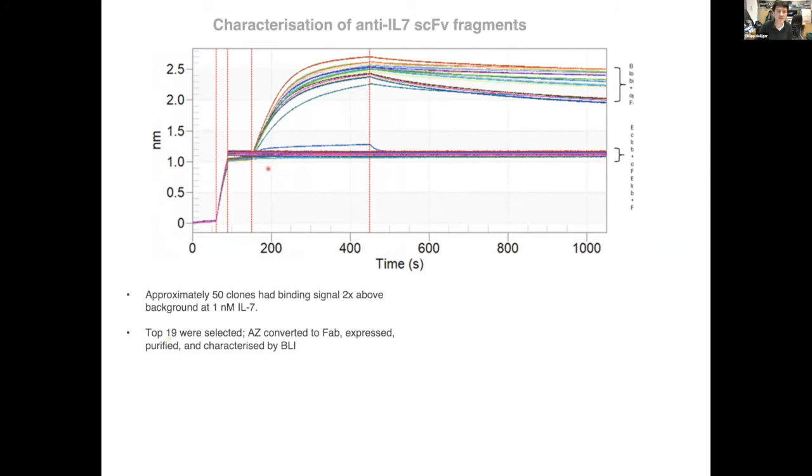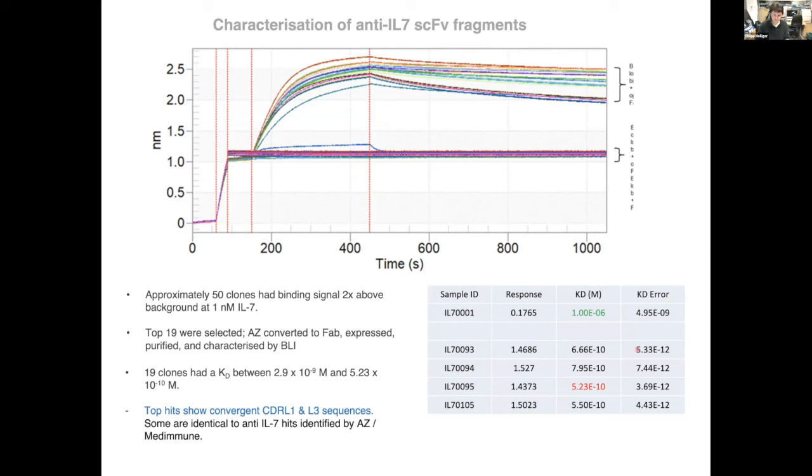And in the end, approximately 50 clones had binding signal about twofold above background at one nanomolar IL-7. And we picked 19 of these to be cloned and expressed and tested on the Octet by BLI. You can see the binding curves here. And what is very gratifying is that they all were very high affinity. They had either low nanomolar or picomolar affinities for IL-7. And showed really a three order of magnitude improved KD compared to the parent clone, the IL-7-001. And also, interestingly, there was convergent CDR-L1 and L3 sequences, which are either identical or very closely homologous to the very best anti-IL-7 binders generated by AstraZeneca in-house.